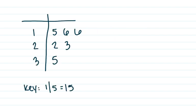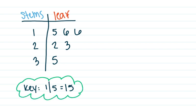This is what one looks like, so let's kind of label it a little bit. Over here you have the stems, and over here you have what are considered the leaves. And the way that this works is that you are given a key. You cannot have a stem and leaf plot without a key. The key tells you how to read the plot. So what this is telling us is that this 1 and this 5 together make 15.